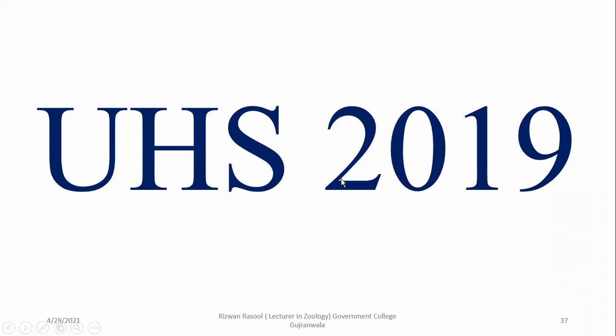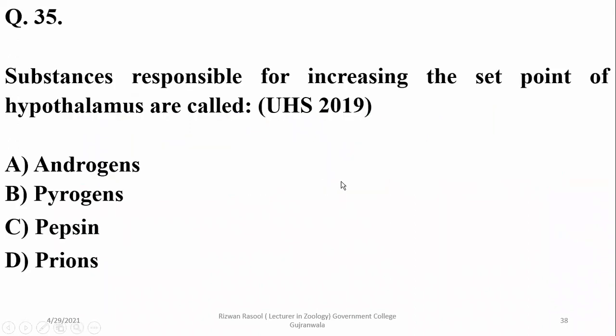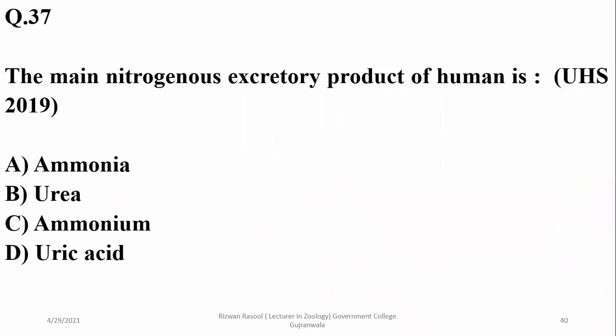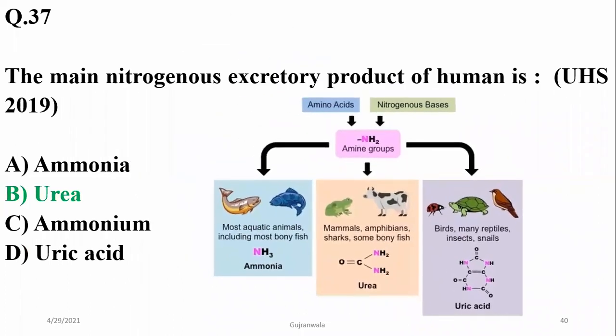The urea cycle is the detoxification of ammonia, so delta. UHS 2019 question one: substances responsible for increasing the set point of the hypothalamus are known as pyrogens. In a diagram of the nephron without vascular supply, part C is the distal tubule, so Charlie. The main nitrogenous excretory product of humans is urea.